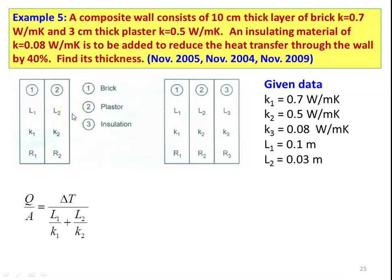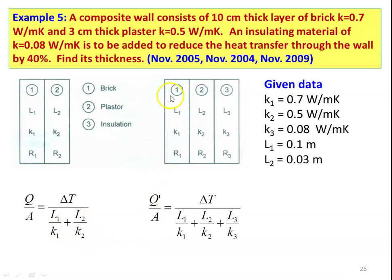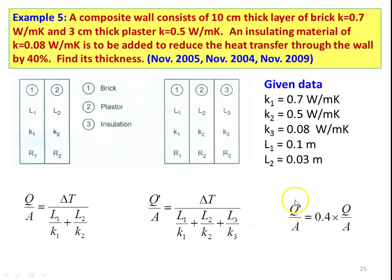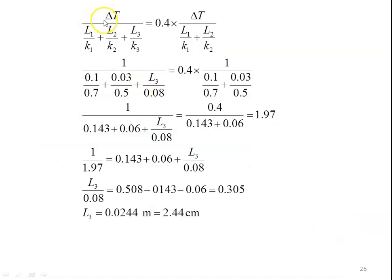Without insulation, heat transfer per unit area: Q/A = ΔT / (L1/K1 + L2/K2). With the insulation layer added: Q'/A = ΔT / (L1/K1 + L2/K2 + L3/K3). The condition is that heat transfer with insulation equals 40% of heat transfer without insulation: Q'/A = 0.4 × Q/A.